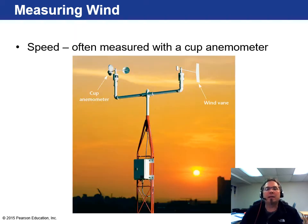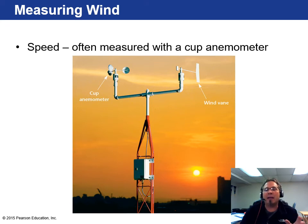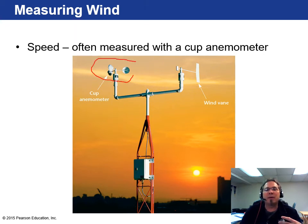Wind speed is measured with a cup anemometer — you may have seen these spinning. It generates a voltage that tells the instrument the wind speed in miles per hour. Here you can also see the weather vane component, which tells you which direction the wind is coming from. Together, these give you both wind speed and direction.